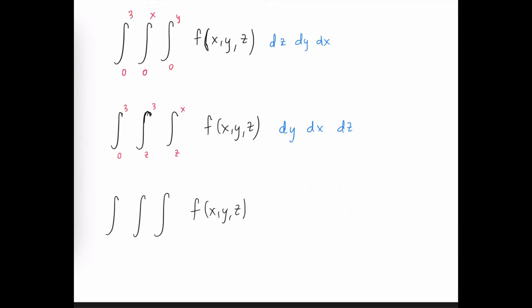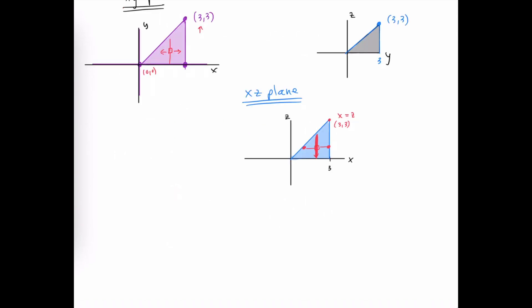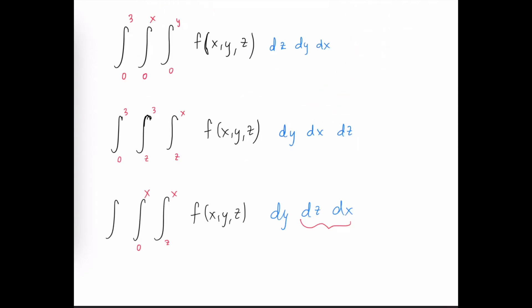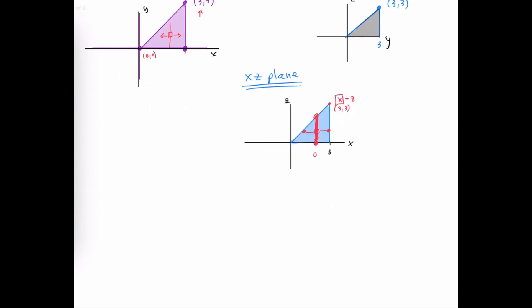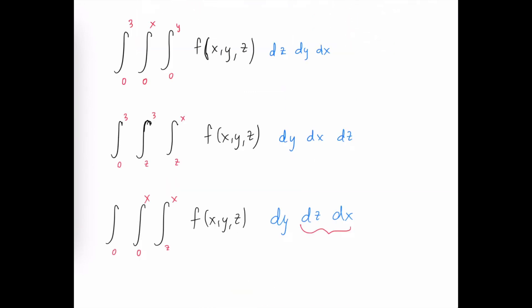The other possibility with dy first is to have dz dx as the second and third iterations. Since we're going with respect to y again first, the inner limits for y stay from z to x, and we still look at the xz plane for the remaining limits. But this time we go with respect to z first, giving a lower limit of 0 and an upper limit of x — so from 0 to x. Then moving right and left, the farthest left extreme has x equals 0 and the farthest right has x equals 3, so the outermost limits are again 0 to 3.